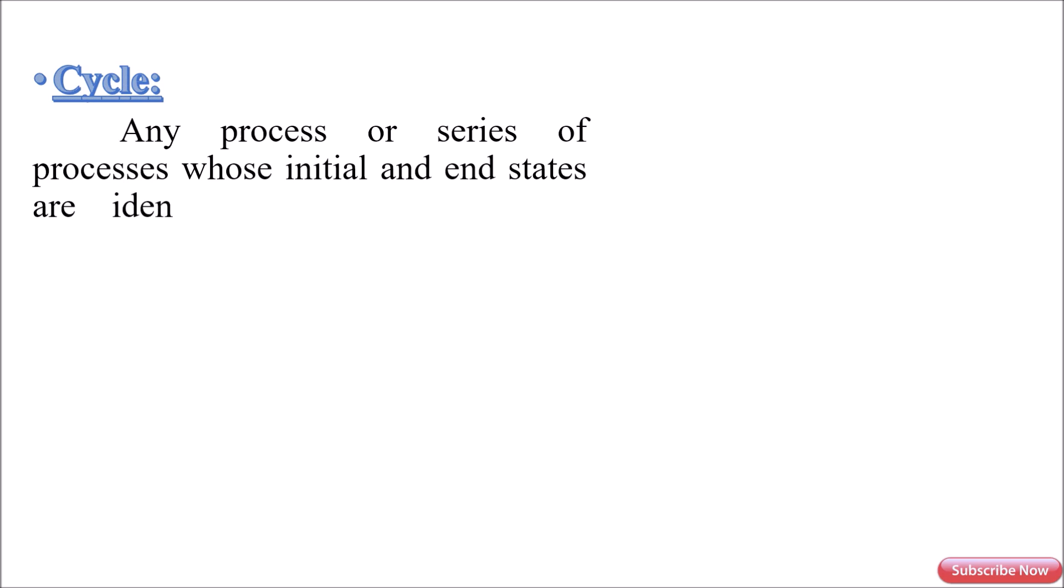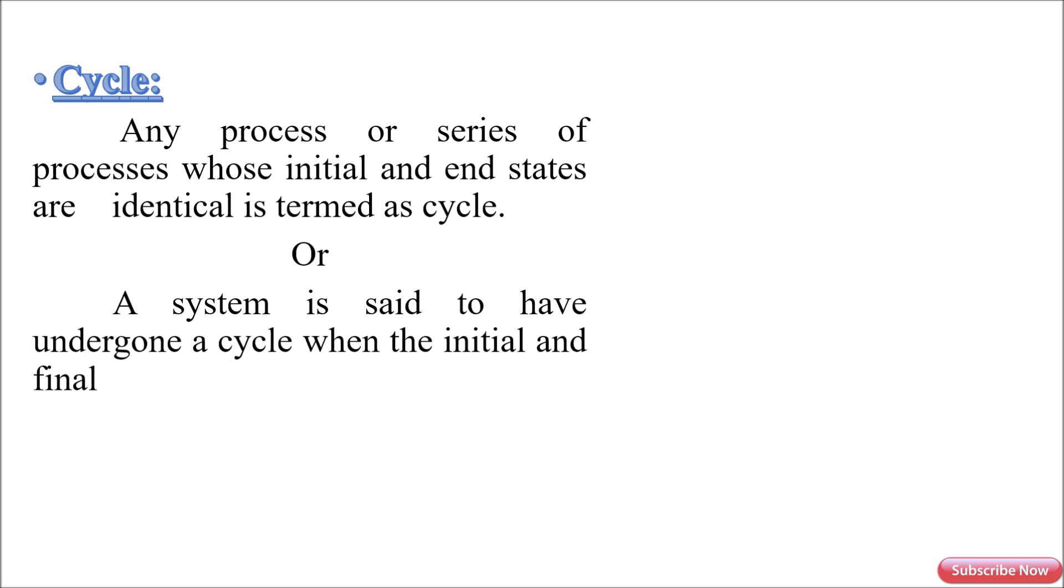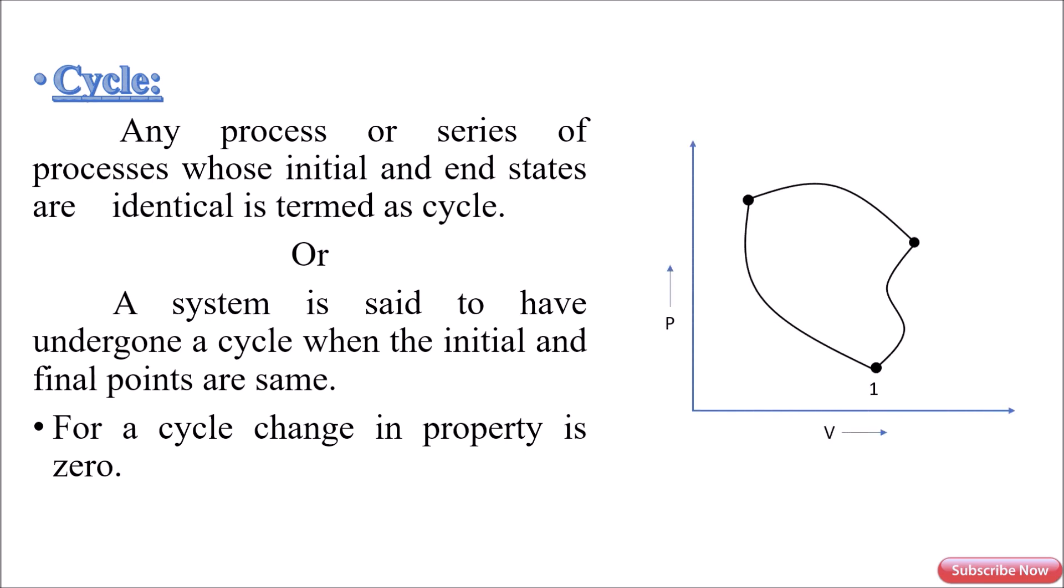Next is cycle. Any process or series of processes whose initial and end states are identical is termed as cycle. Or, a system is said to have undergone a cycle when the initial and final points are the same. For a cycle, change in property is zero. As shown in this graph, both initial and end point is 1.